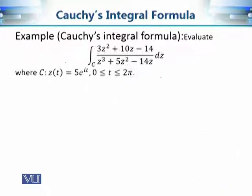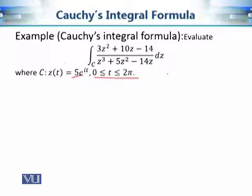Moving on to our new example. We have a rational function — a polynomial over a polynomial — where the numerator is a quadratic polynomial and the denominator is a cubic polynomial. The contour is a positively oriented circle of radius 5, given in parametric form as 5e^(it). As an exercise, I encourage you to try evaluating this contour integral without Cauchy's integral formula; in my experience it becomes very complicated — computationally demanding, at least a few pages of calculation.